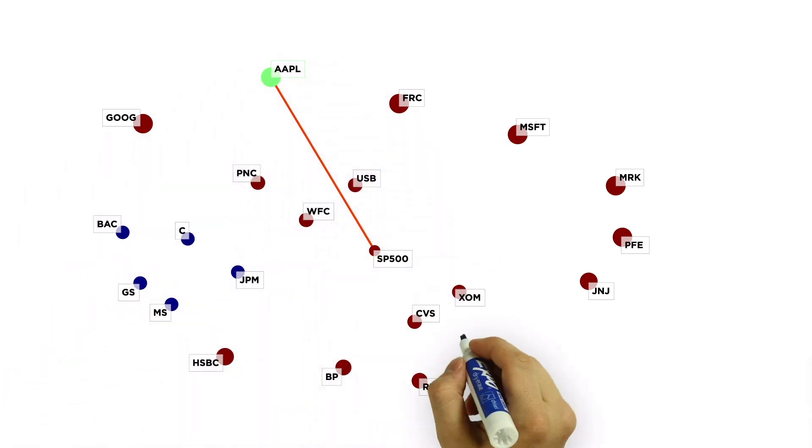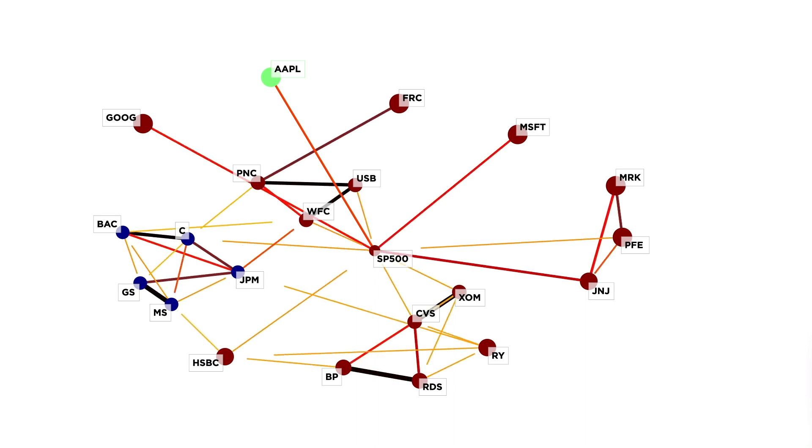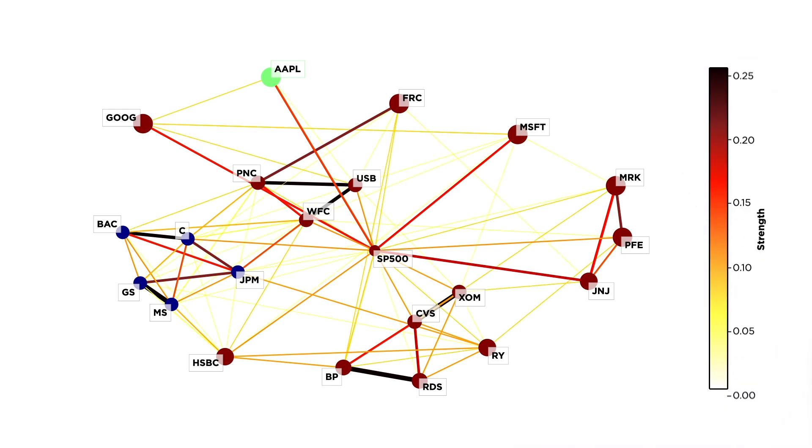Each edge links two stocks. The strength of the edge is defined by the sparse inverse covariance matrix, a precision matrix estimated using graphical lasso. The higher the strength value, the darker and thicker the edge, indicating that the stocks at the ends of the edge are more conditionally correlated.